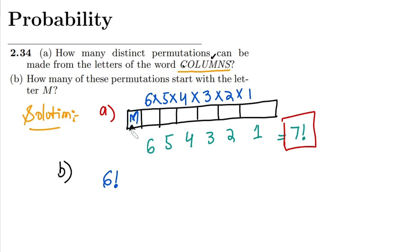So therefore, how many permutations will I have here? I will have six factorial, because the first location is now captured and I have to make changes in the other locations or other spots. Therefore these are six factorial, and this is the answer of part B.